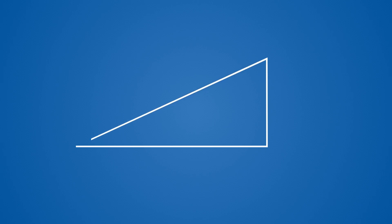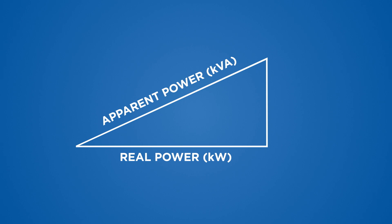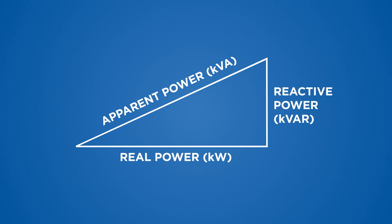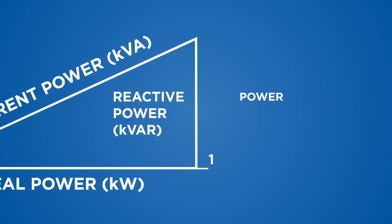Now let's show you the relationship between the three different types of power in a graph. First we have KVA, then KW, and KVAR. The KVA is the input of the UPS, the KW is the actual real power of the UPS, and the KVAR is the energy consumed by the UPS — or in a UPS spec, the power factor.